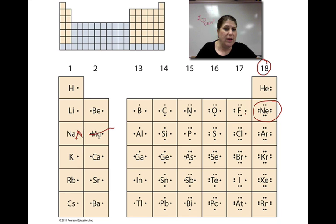When sodium loses this one right here, it becomes like this. It has eight valence electrons of neon. They're all going to try to do that. Some have to gain and some have to lose.